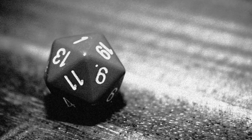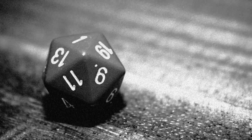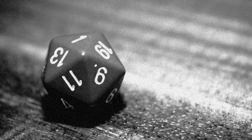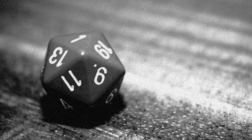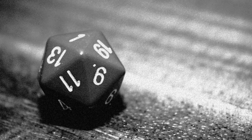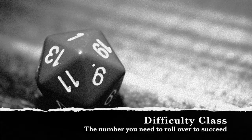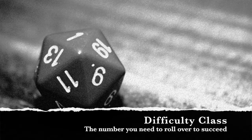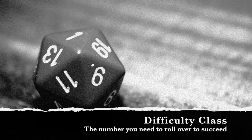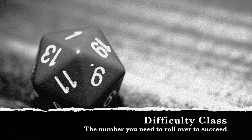Whenever you need to roll to see if you succeed at something in D&D, you'll pick up your D20 and roll it. Then you add the number you rolled to your appropriate modifiers and compare the total to the difficulty class set by the DM or the rules. If you meet or beat that number, you succeed.